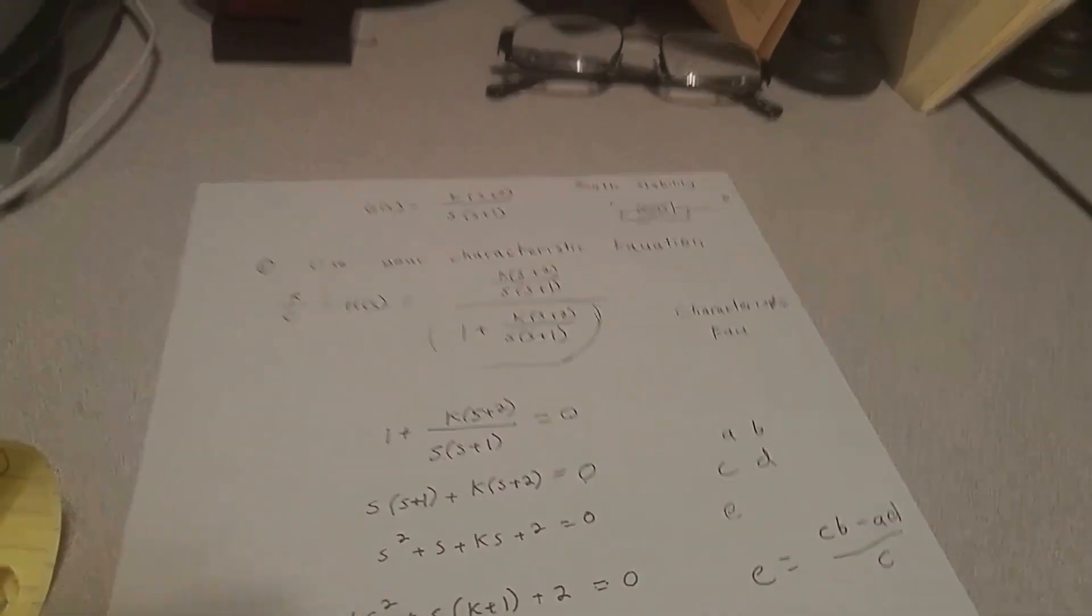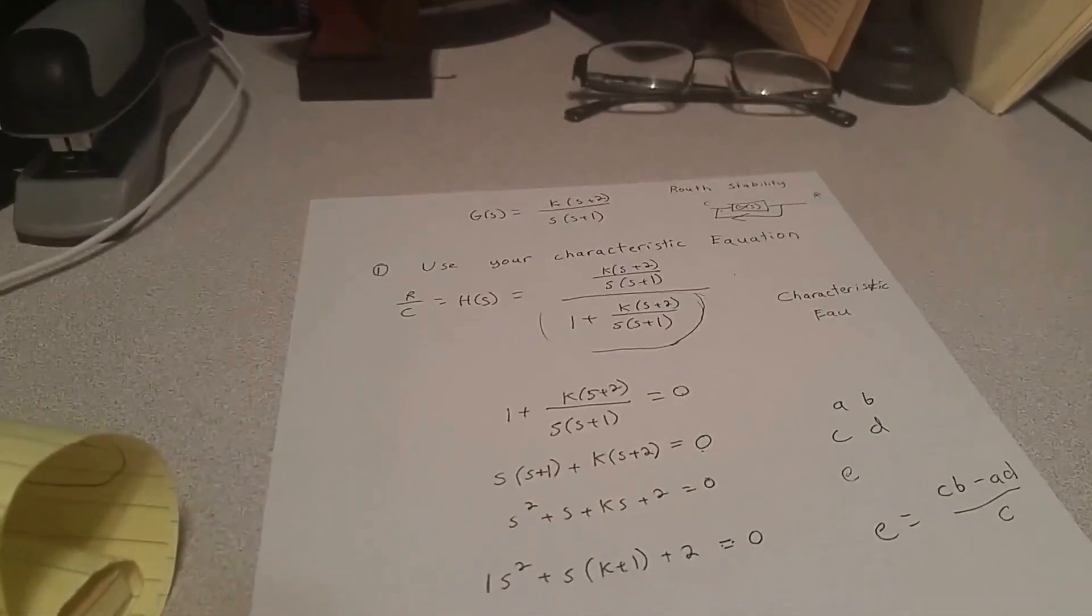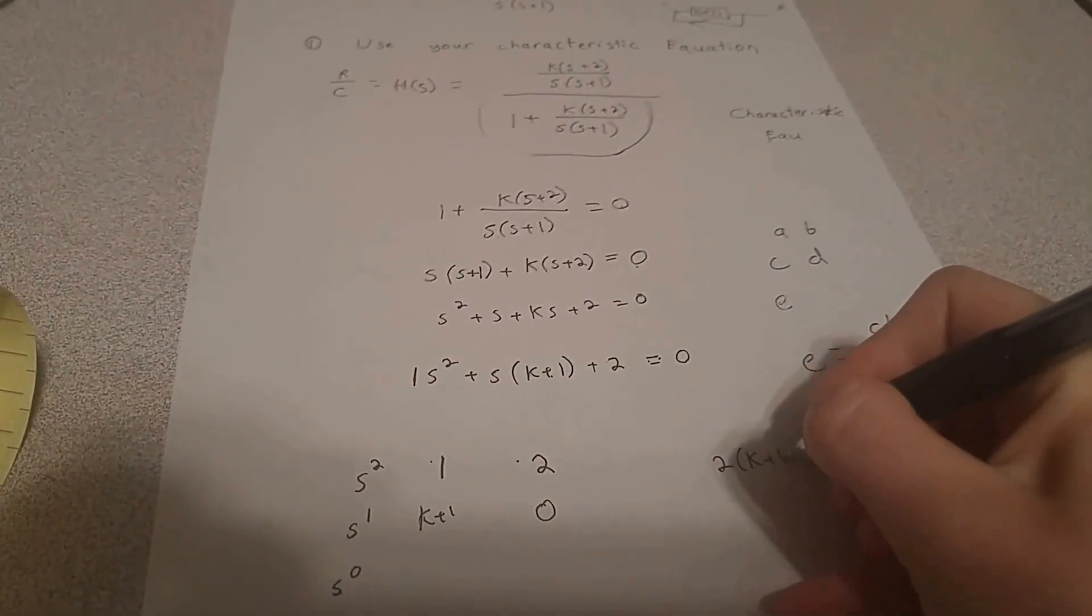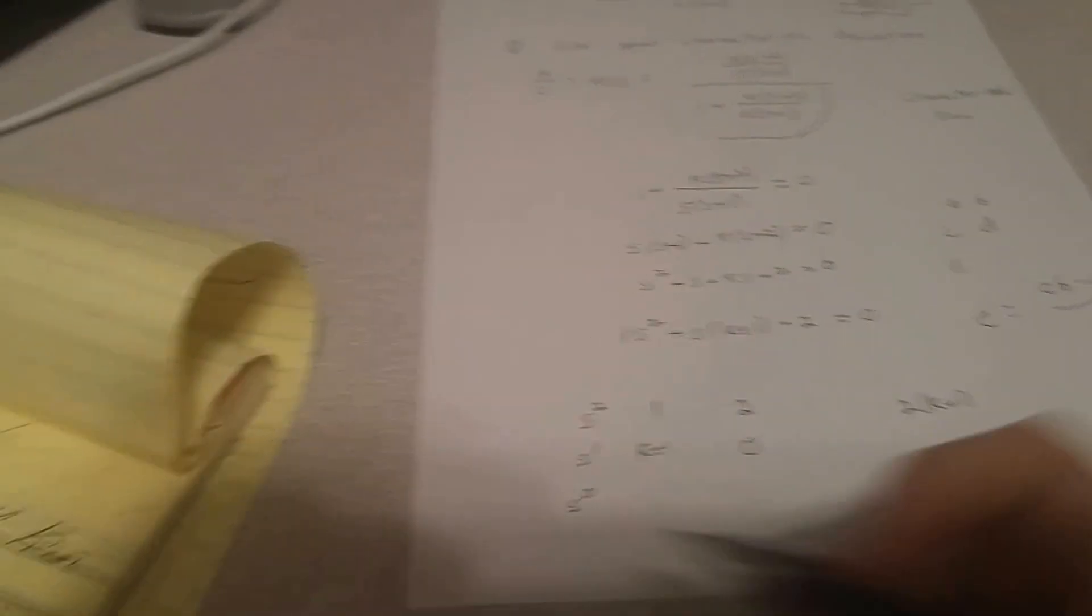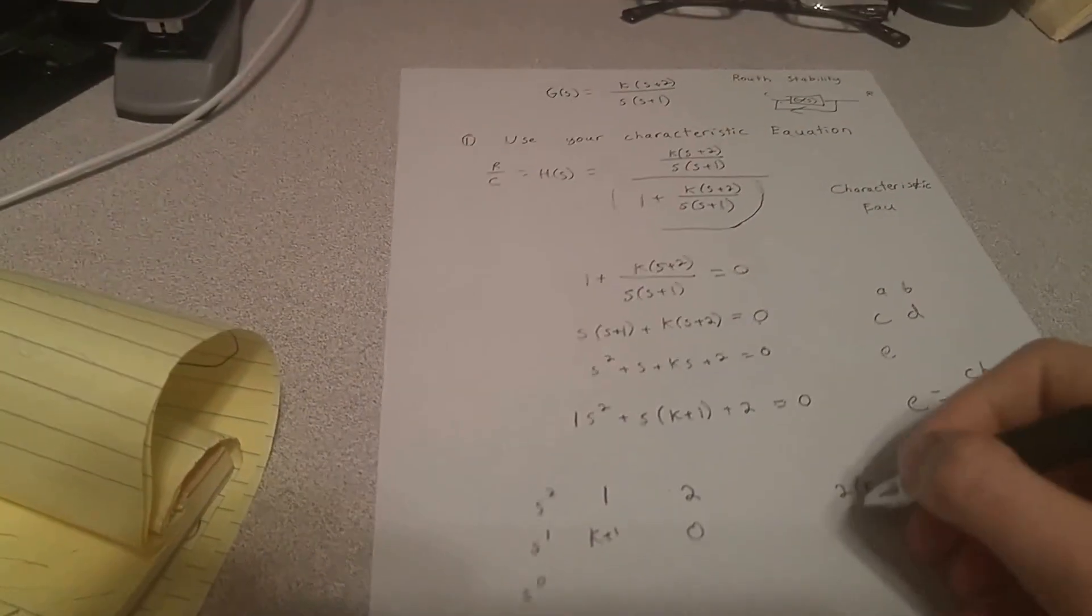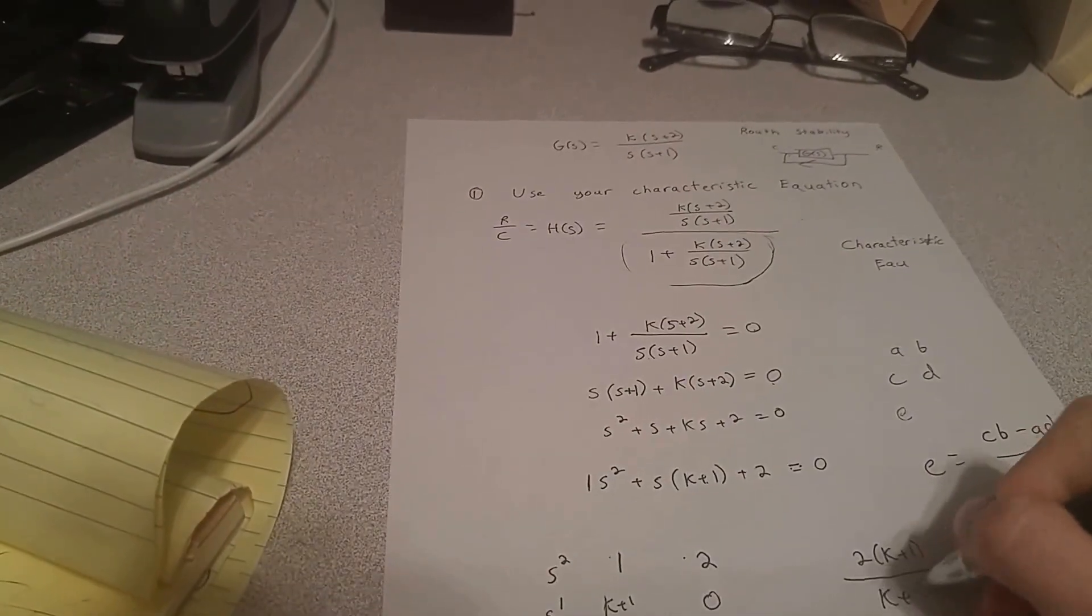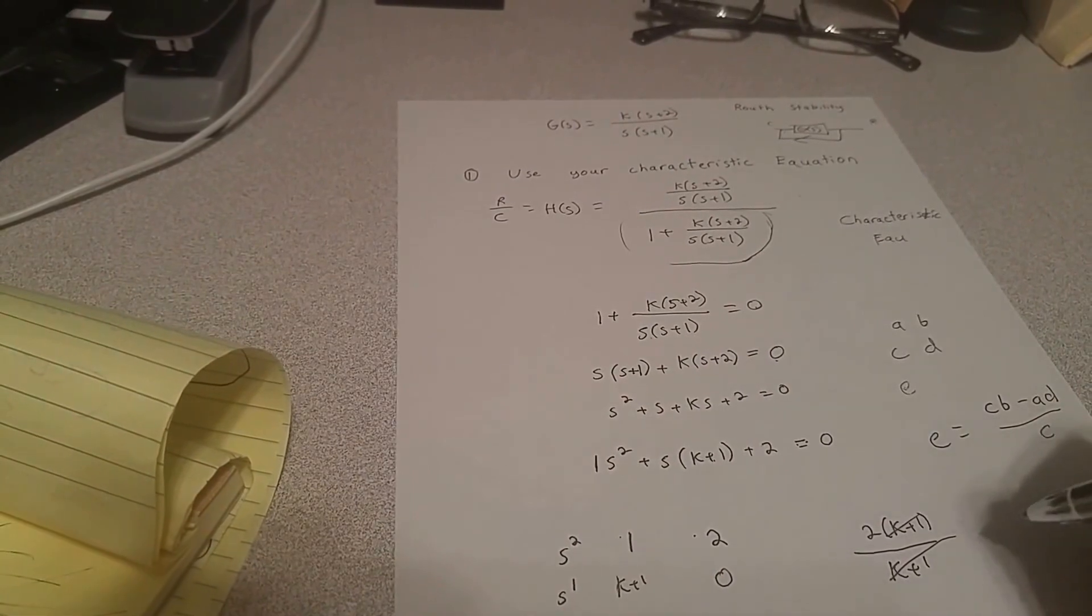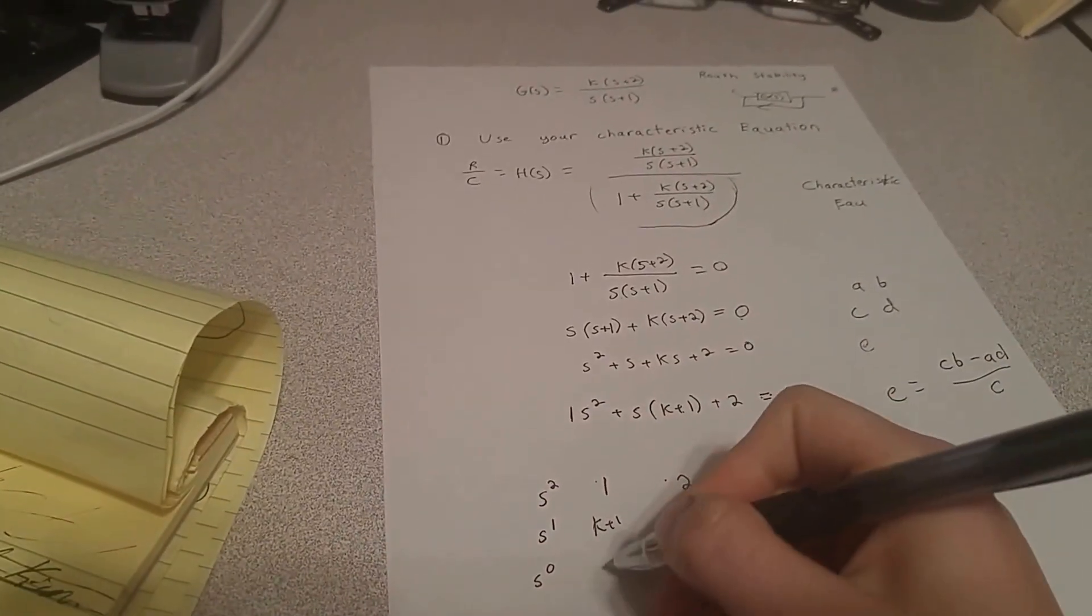Hopefully that makes sense. It's like the opposite of a matrix, basically. So when I do that, I get 2 times k plus 1 minus 1 times 0 is 0, so minus 0, divided by k plus 1. And would you look at that? The k plus 1s cancel out. So this value right here is 2.